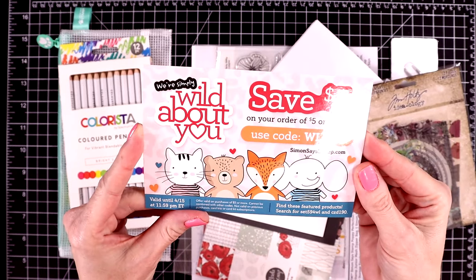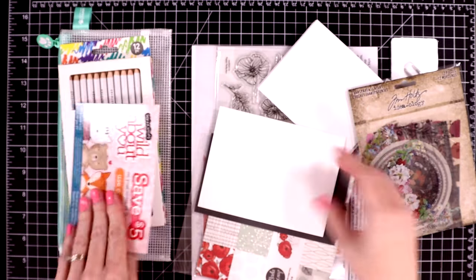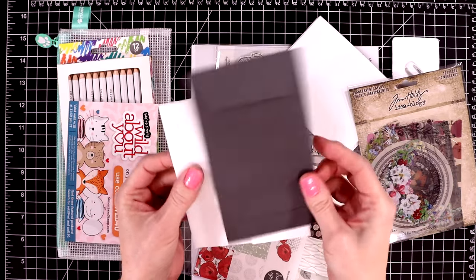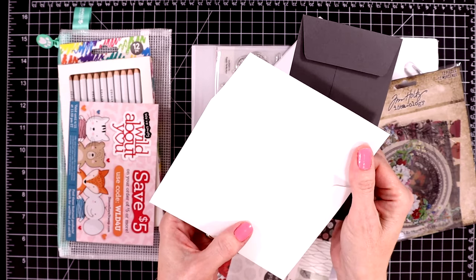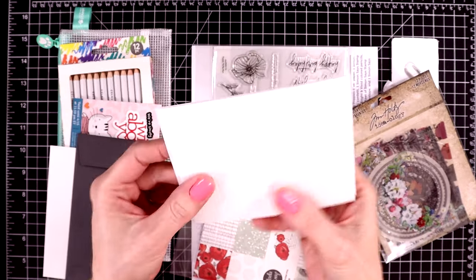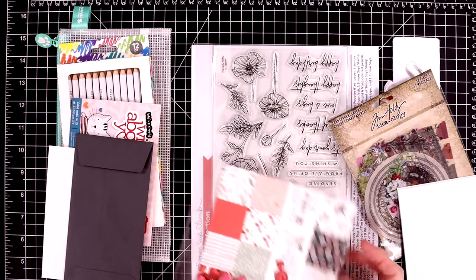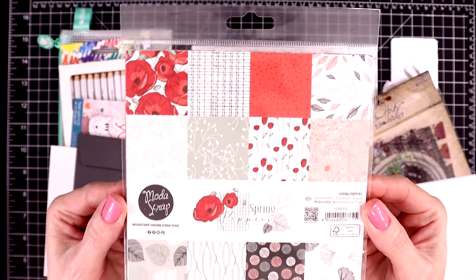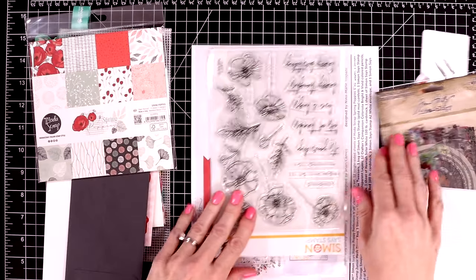There's a five dollar off coupon on your next purchase. And then you get two envelopes, an A2 sized envelope and a mini slim line. You also get some foam adhesive strips. I use these a lot on my cards. So nice to have in your stash. And then some gorgeous pattern paper.